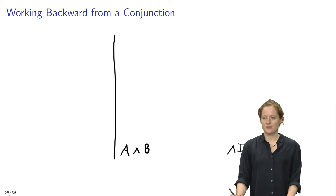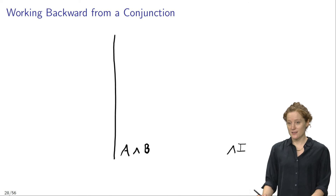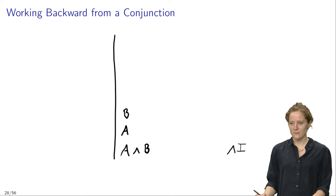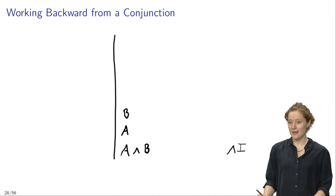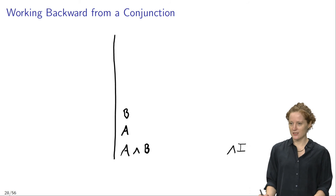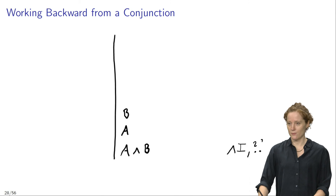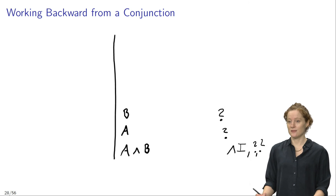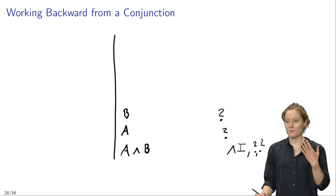Now I know that to apply conjunction introduction, I need to first prove both conjuncts separately. So I'm going to write A in one line of my proof and B in another line. If I manage to prove B and also manage to prove A, then I can infer A and B and justify that inference by citing conjunction introduction as applied to two lines — I'll put question marks for those line references, and also behind A and B to remind myself that I still need to prove these two lines.